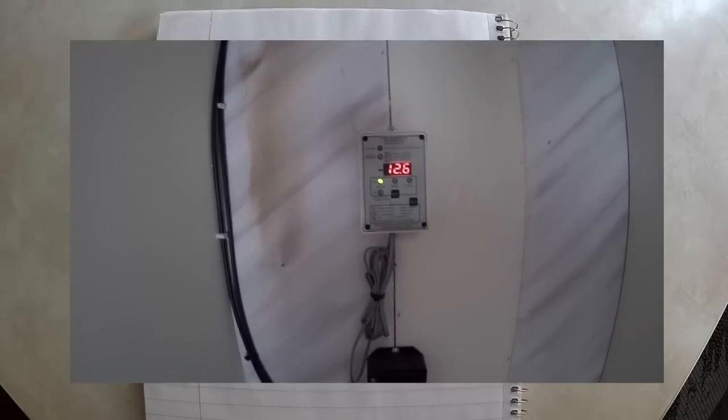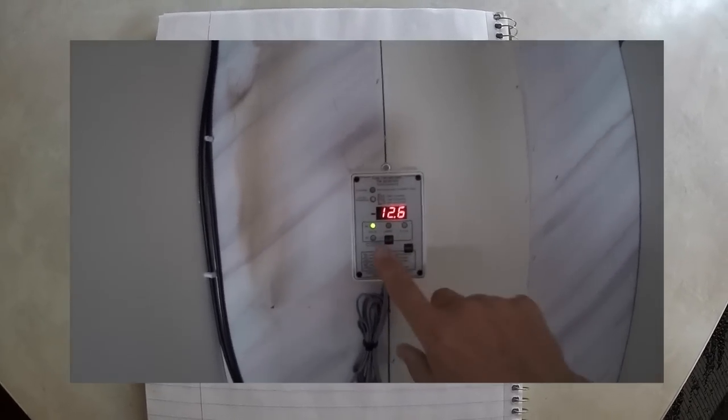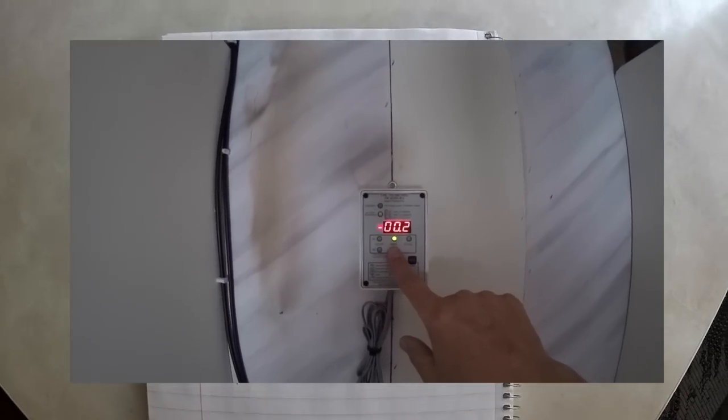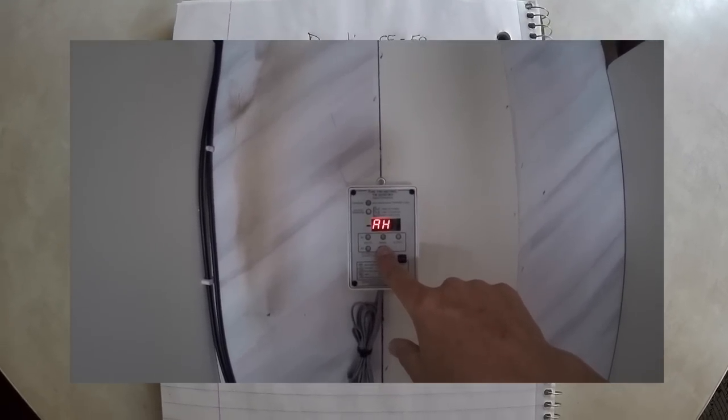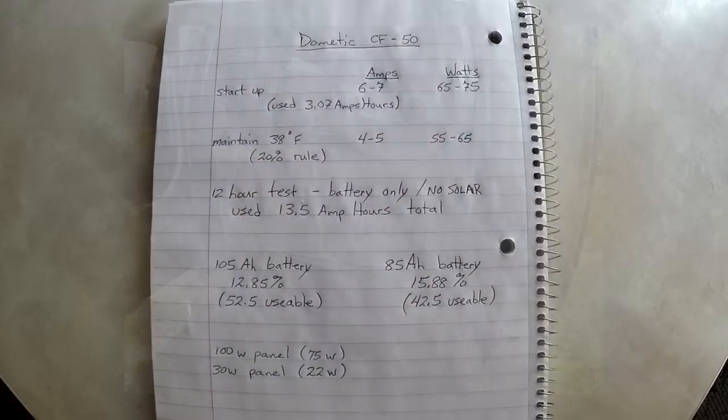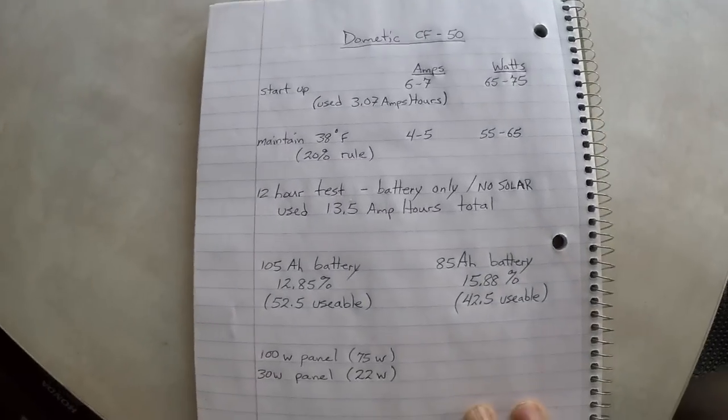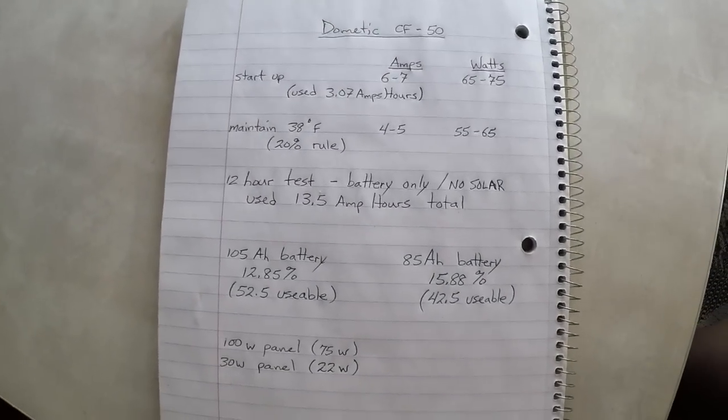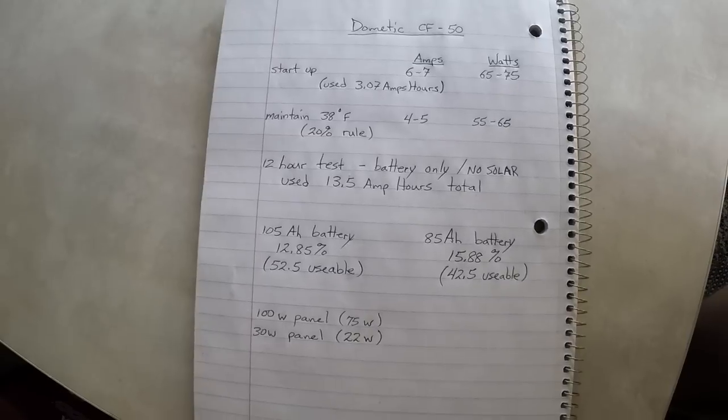Again, this video isn't for the experts out there. I'm sure there's people that know a lot more about this than I do. This is for the brand new guy that may not have any knowledge in solar power, which I just barely have maybe a hair more than no knowledge. Anyway, that's my disclaimer. What you're looking at is just a quick sheet that I drew up. Of course, at the top, Dometic CF-50.